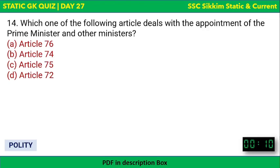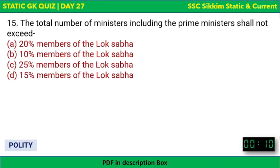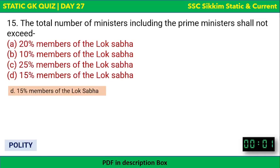Next: Which article deals with the appointment of the Prime Minister and other ministers? Options are Article 76, 74, 75, or 72. The correct answer is Article 75. Following that: The total number of ministers, including the Prime Minister, shall not exceed 15% of the members of Lok Sabha, as per the constitution.